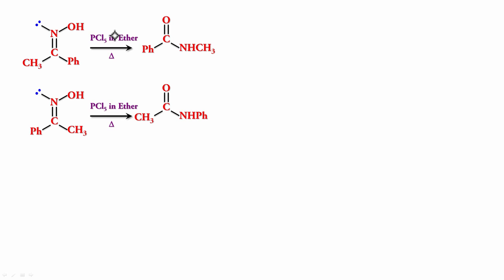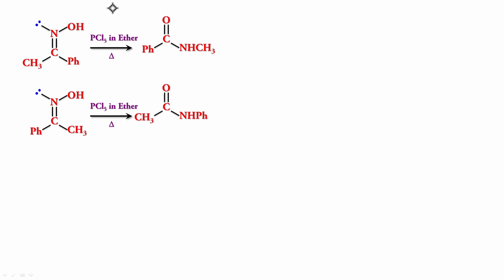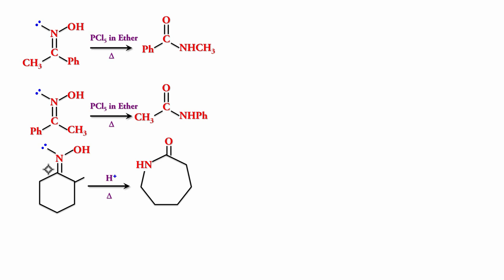Sometimes in questions, rather than giving you which particular geometric isomer of the oxime they have, they would give you the amide product and make you guess the structure of the oxime. The converse is also possible — they can give you the oxime and ask what amide is formed. And if it is a cyclic oxime, it's going to become a cyclic amide called a lactam. It is the carbon that is opposite to OH that migrates, so the ring expands and it becomes a seven-membered ring.